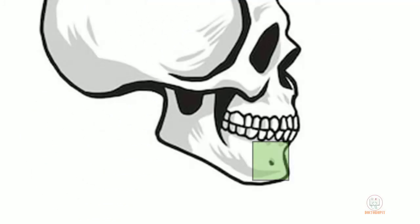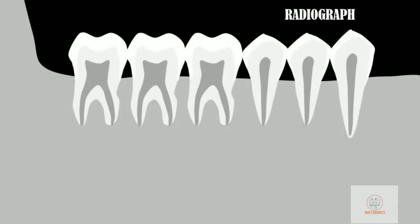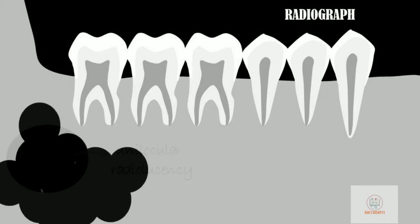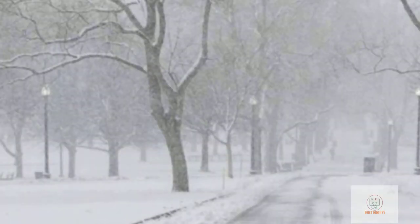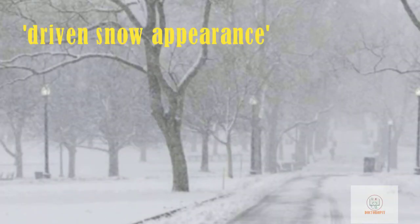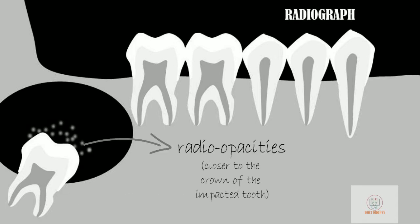Peripheral CEOTs are more common in anterior gingiva than posterior. On radiograph, CEOT may appear as a well-circumscribed unilocular or multilocular radiolucency. Varying amounts of flecks of radio-opacity are seen within this radiolucency due to the calcifications in the tumour, giving the lesion the characteristic driven snow appearance. About half the CEOTs are associated with an impacted tooth, making it appear like a dentigerous cyst, with the differentiating radio-opacities generally seen closer to the crown of the impacted tooth.